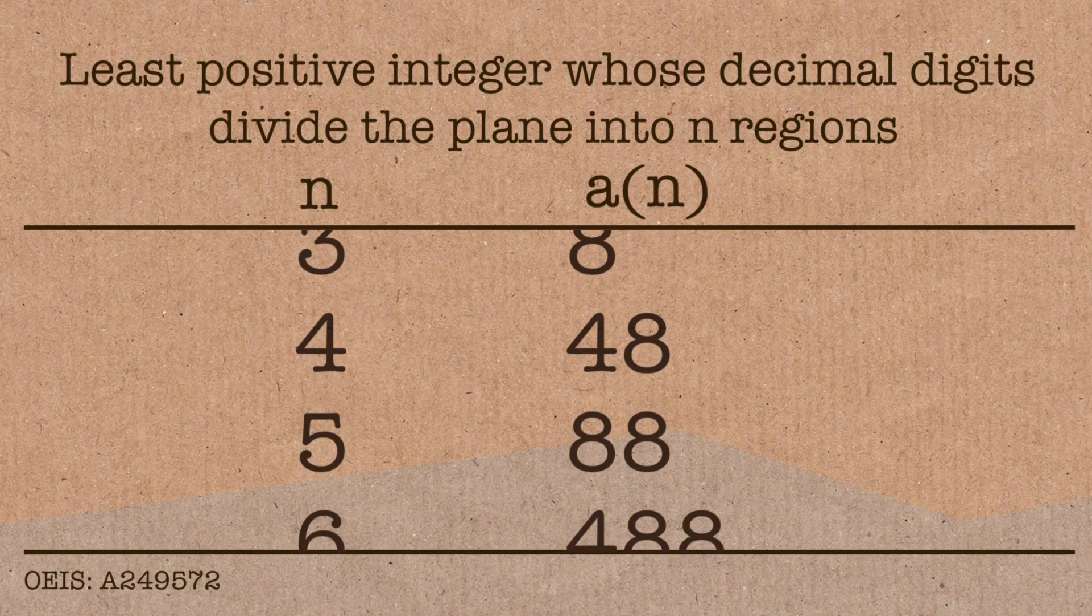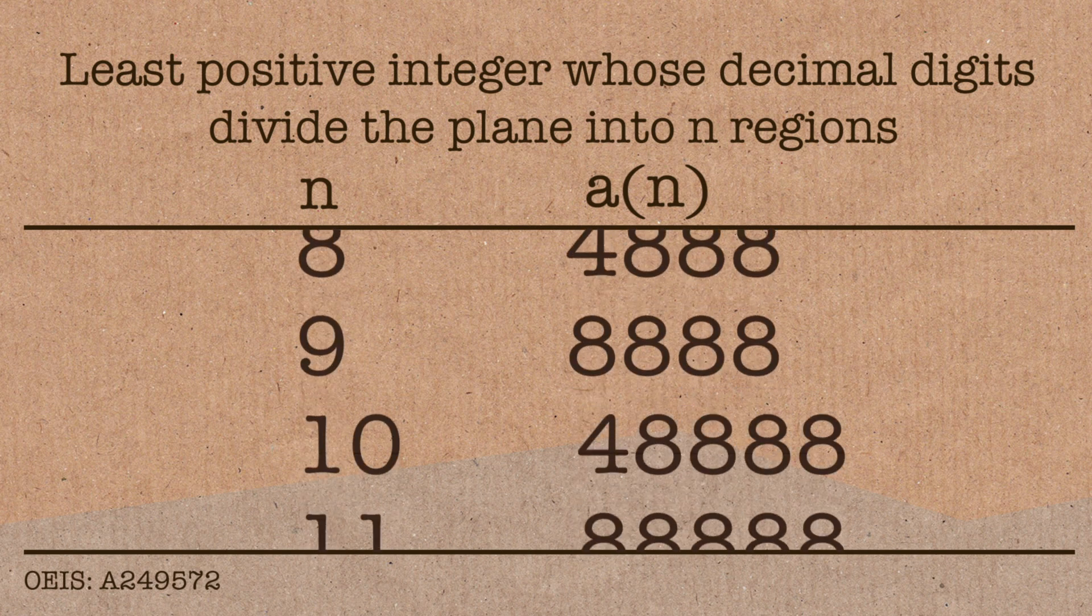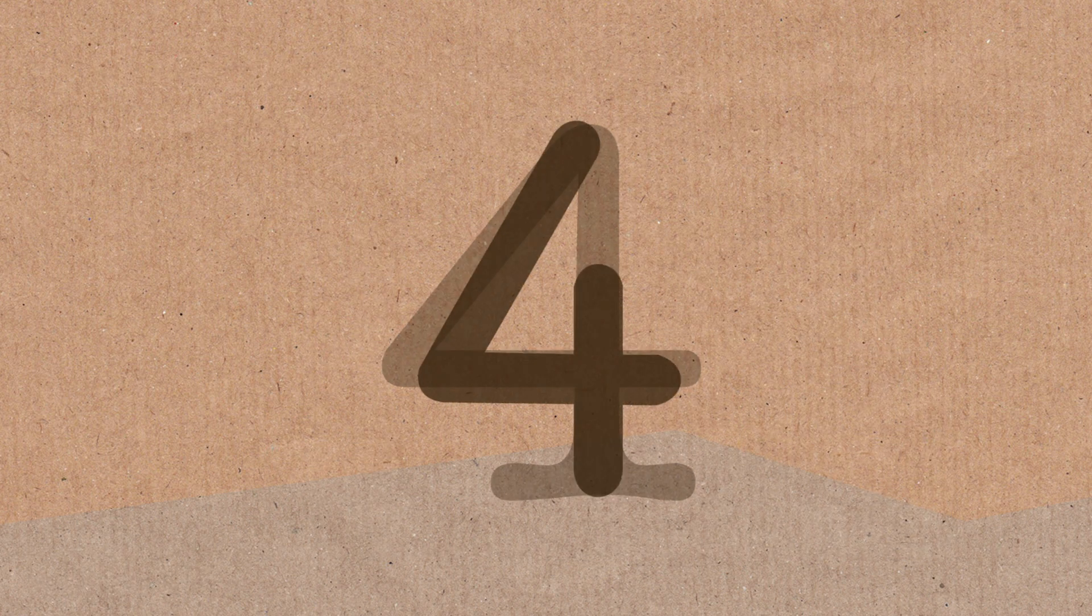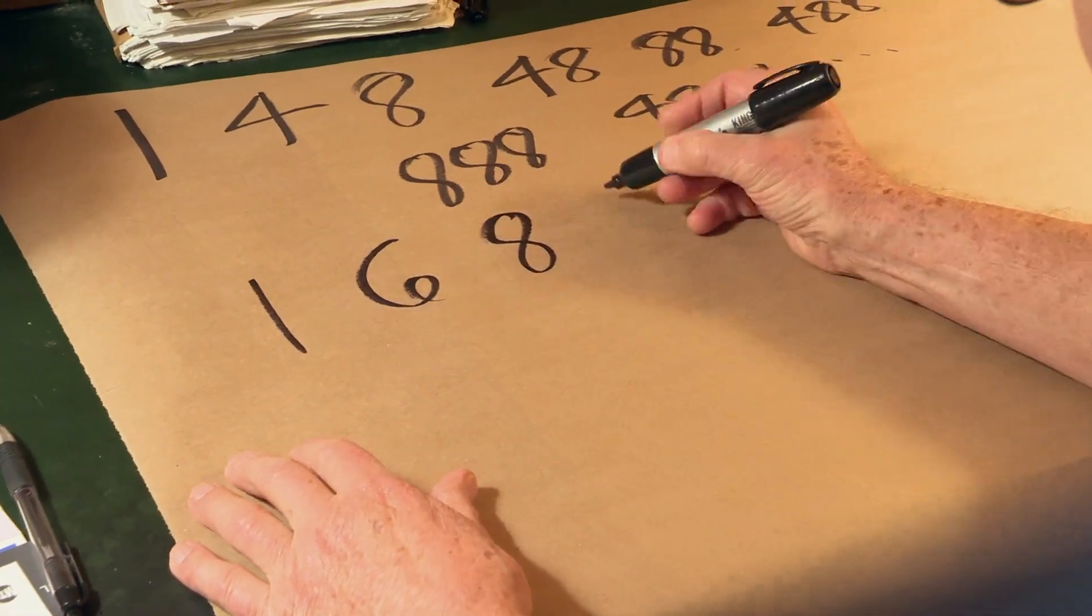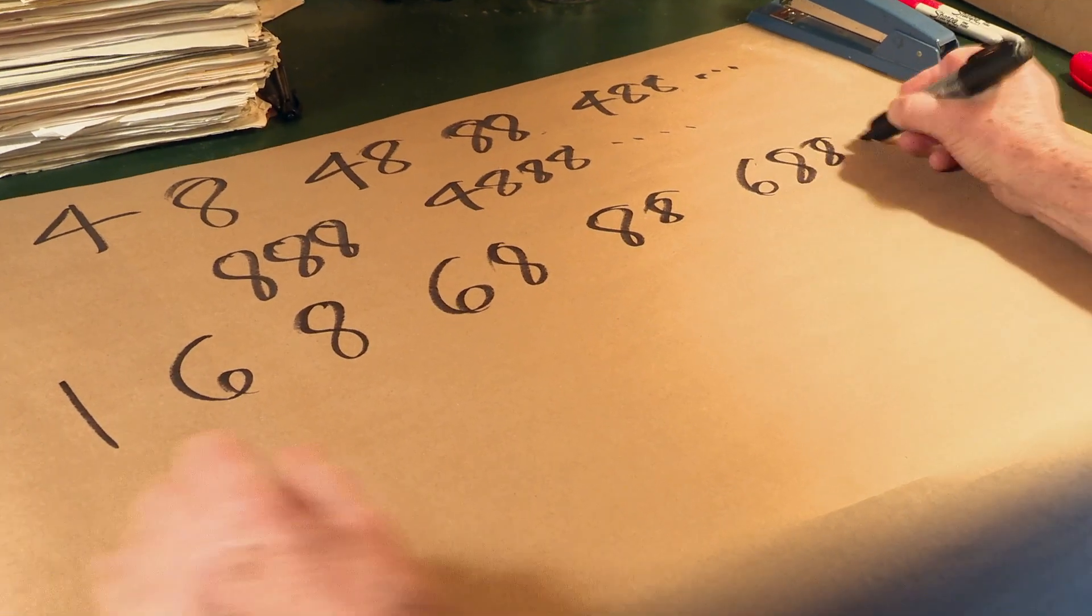People always get really funny about sequences and numbers that are sort of base 10 specific. This is how you draw your numbers specifically. If you draw your four non-enclosed, it would change the sequence. In that case, if your four is non-enclosed, then you would make it 1, 6, 8, 68, 88, 688, and so on.